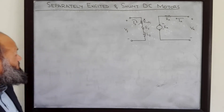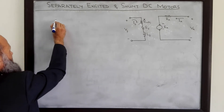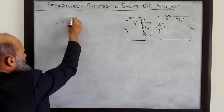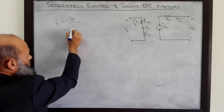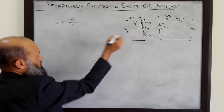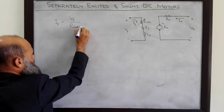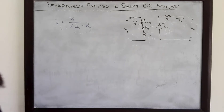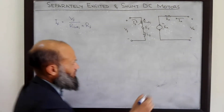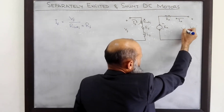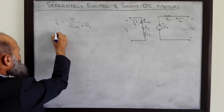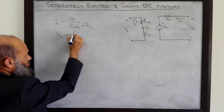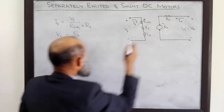In these separately excited DC motors, the field current is equal to the field voltage divided by the resistance in that path — that is, the adjustable resistor plus the resistance of the field winding. The armature voltage, also called the terminal voltage, is equal to the back EMF plus the voltage drop across the armature resistance.